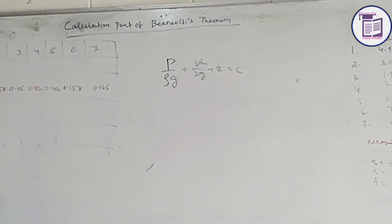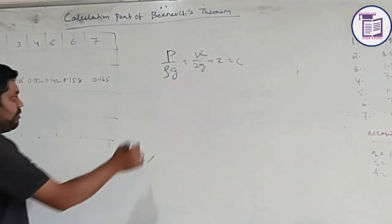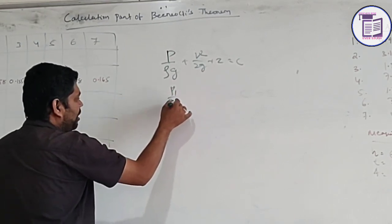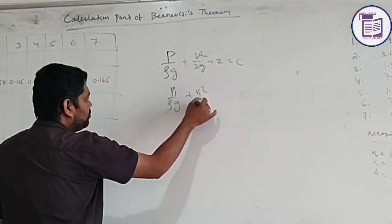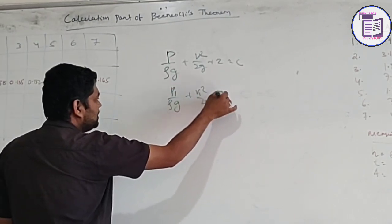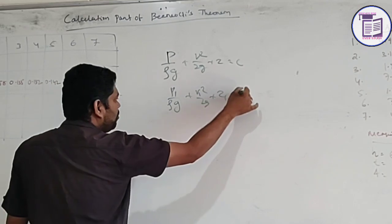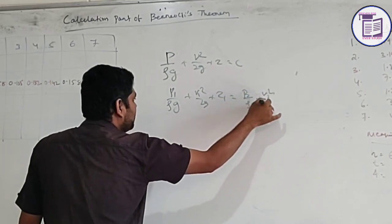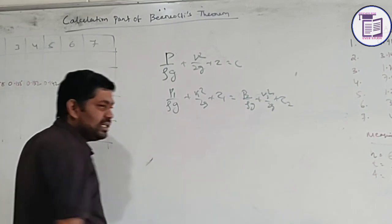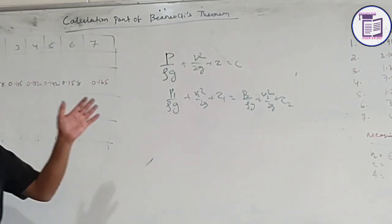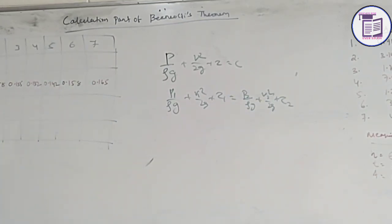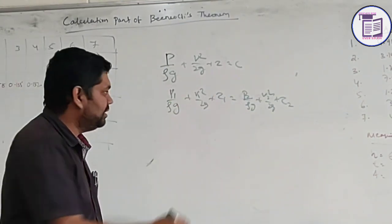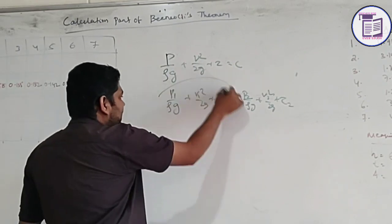This is your Bernoulli's theorem equation. Considering section 1 and section 2: P1 by rho g plus V1 squared by 2g plus Z1 is equal to P2 by rho g plus V2 squared by 2g plus Z2. These are the section 1 to section 2 proof. So we are considering the constant level of energy. E1.